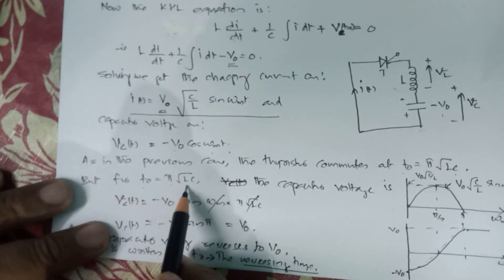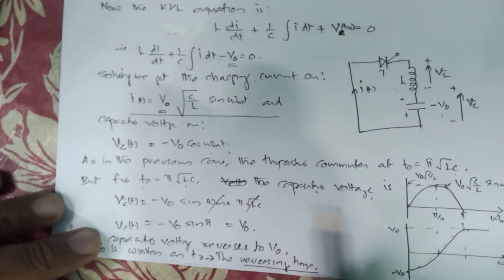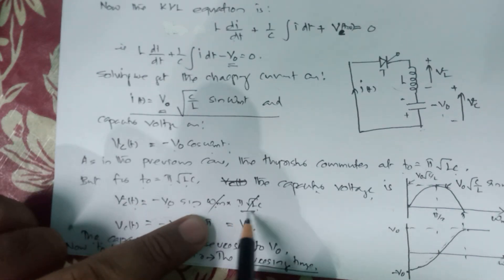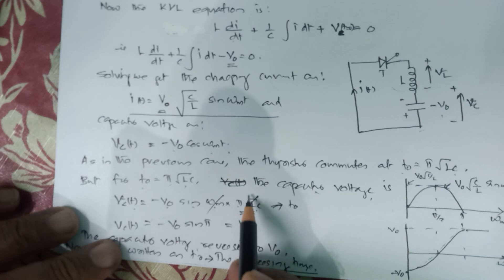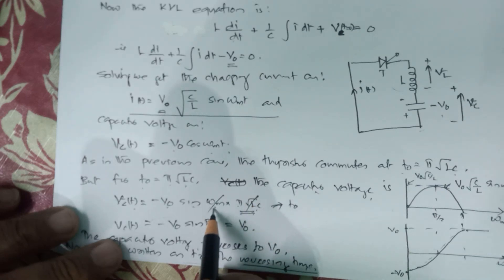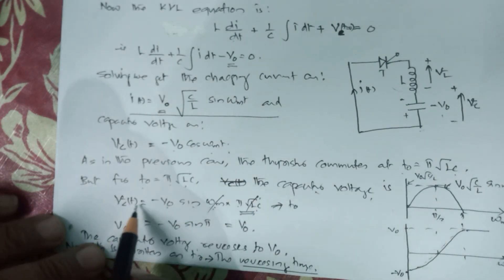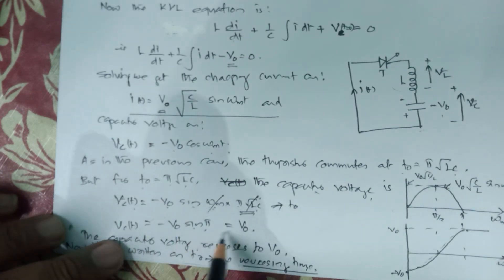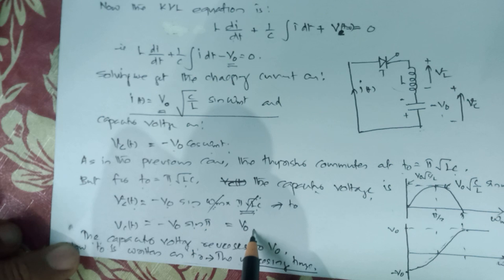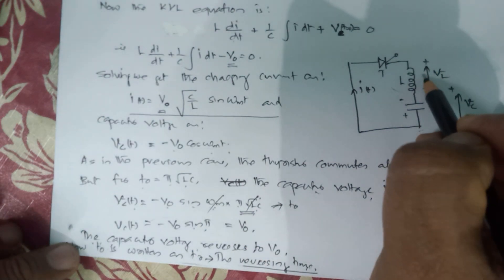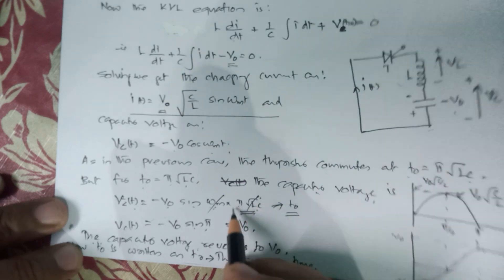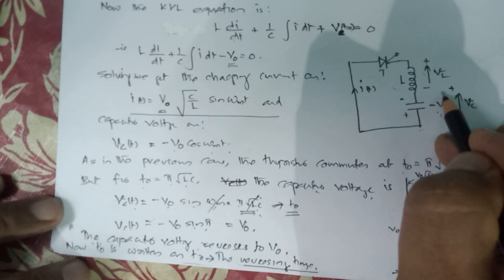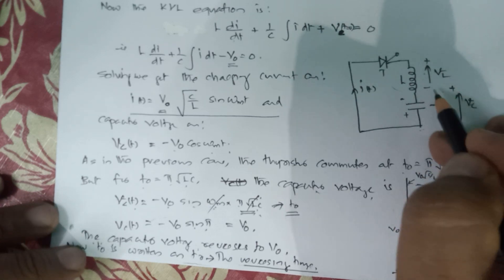For t0 equals π·√(LC), the capacitor voltage is given by Vc(t0) equals −V0·cos(ωm·π·√(LC)). Since ωm equals 1/√(LC), this simplifies to −V0·cos(π), and since cos(π) equals −1, Vc(t0) becomes V0. This means when the thyristor is commuted at time t0, the voltage across the capacitor changes from −V0 to +V0 — the voltage reverses across the capacitor.